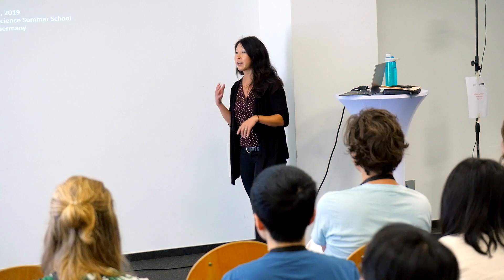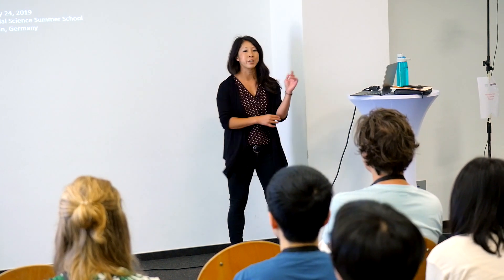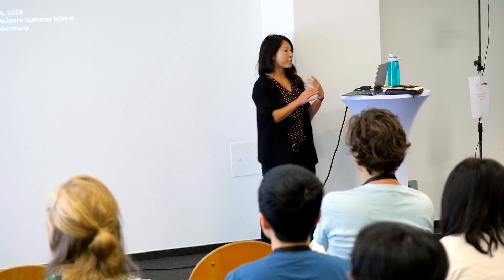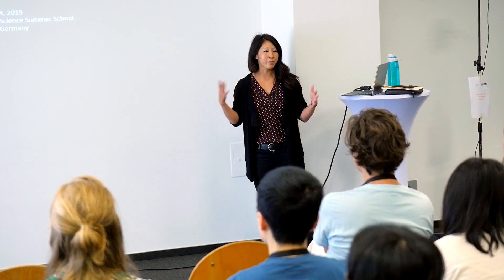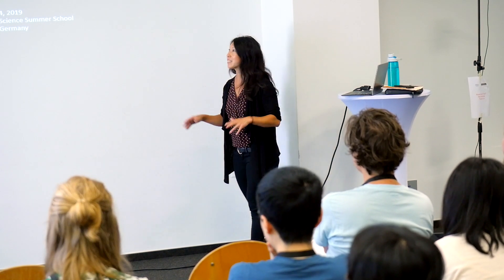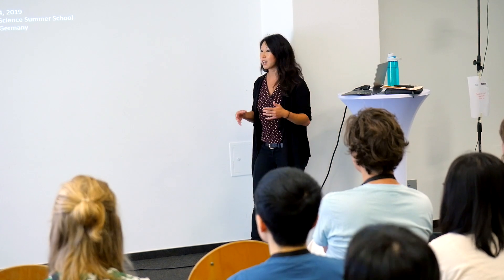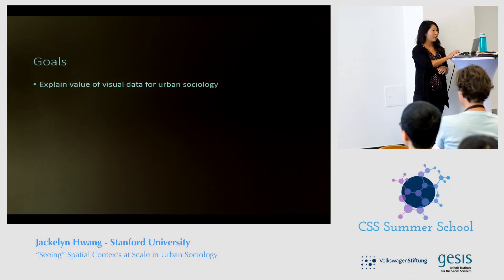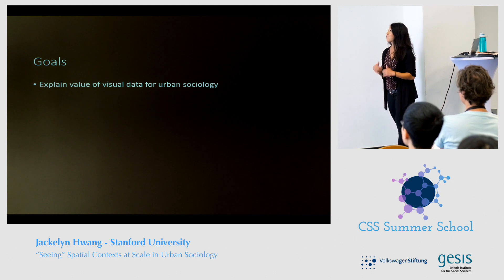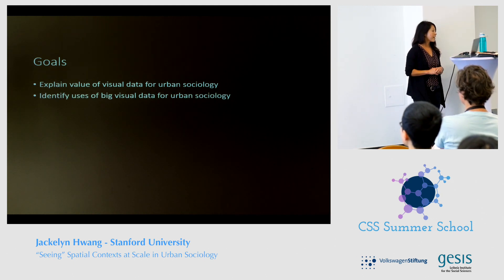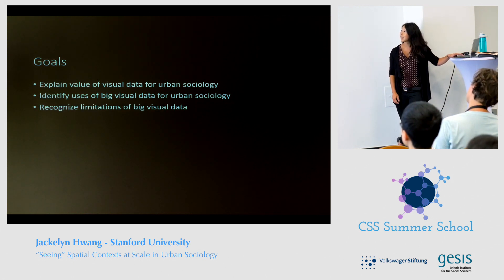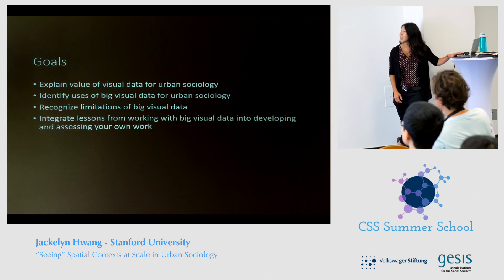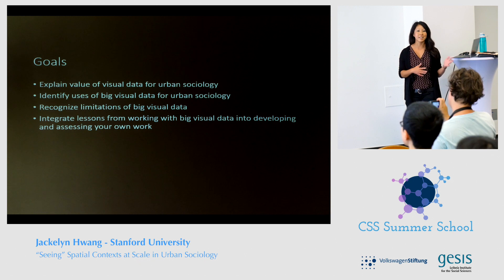My research is primarily on how urban changes in American cities shape and are shaped by racial and class inequality, segregation, and gentrification. Today I'm going to give you an urban sociology 101 crash course, then talk about the theoretical and empirical motivations for using multimedia data in urban sociology, and walk you through a project I'm working on. By the end of this session I hope you'll be able to explain the value of visual data for urban sociology, identify uses of big visual data, recognize limitations, and integrate lessons into your own work.